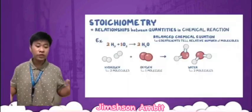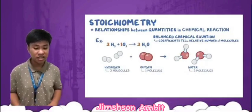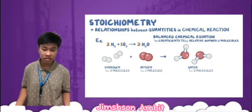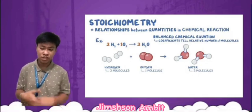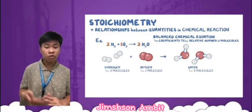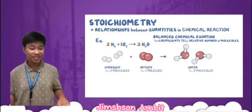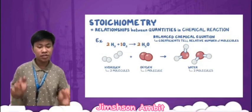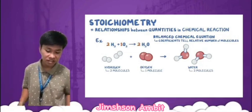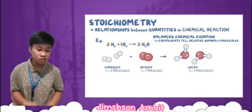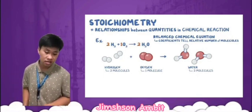We can also use stoichiometry to calculate the limiting reagent. Stoichiometry is the study of quantitative relationships between reactants and products in a chemical reaction. To calculate the limiting reagent using stoichiometry, we need to know the moles of each reactant and the mole ratio between the reactants.